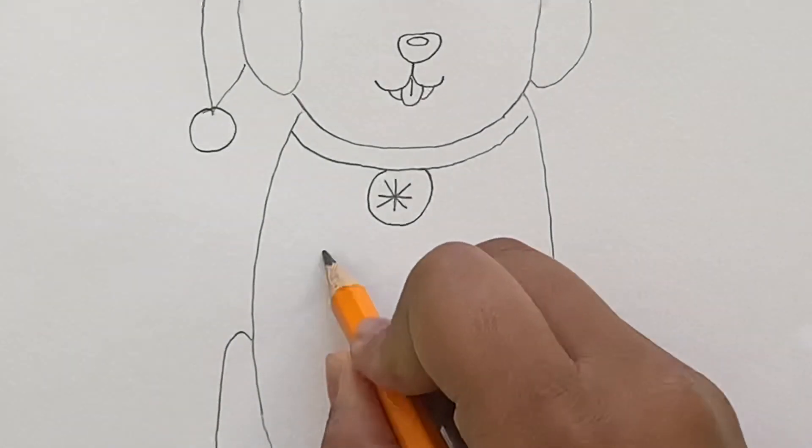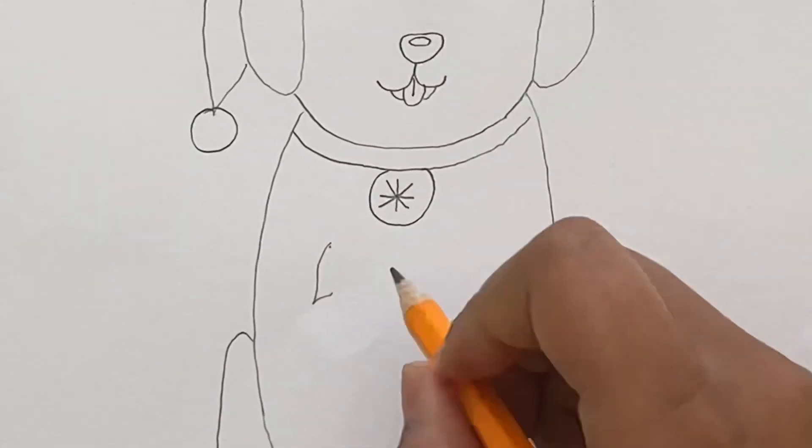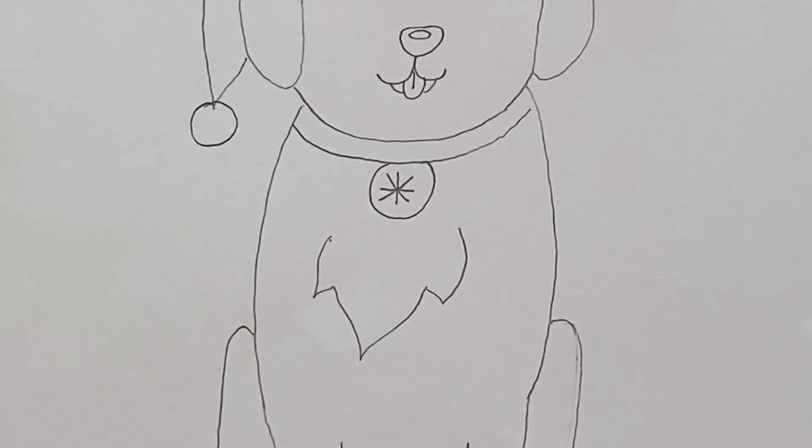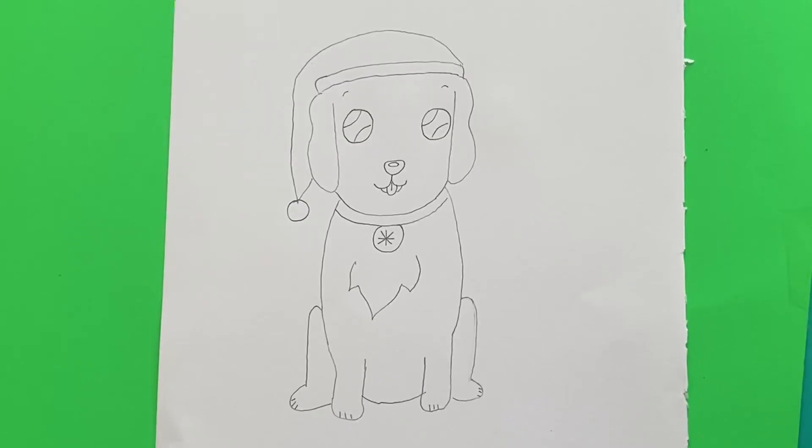And now we're going to draw a little patch of fur. Right here. There. Now we're done with that, guys. So now we're going to move on to the coloring part. I'm going to fast forward this.